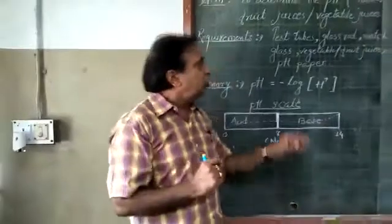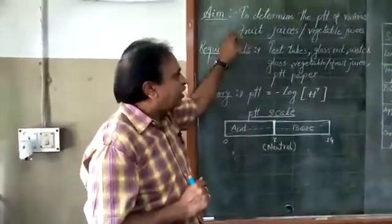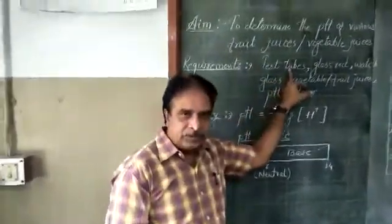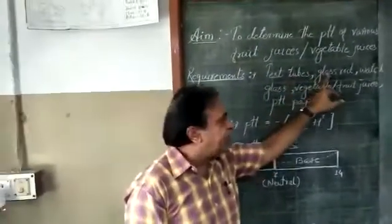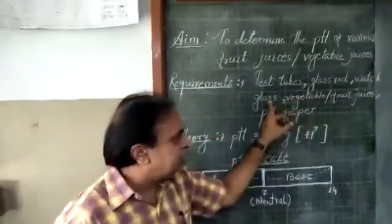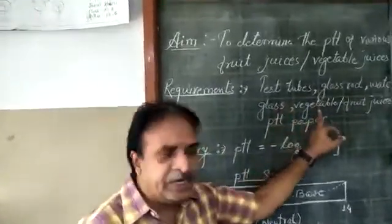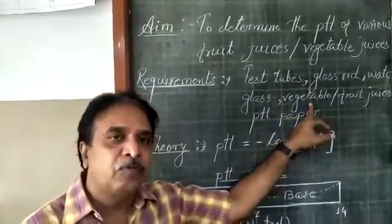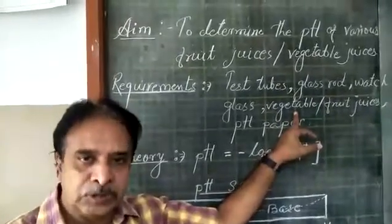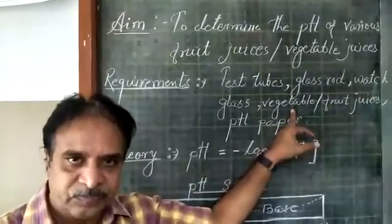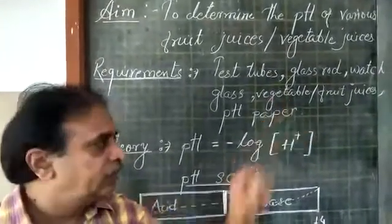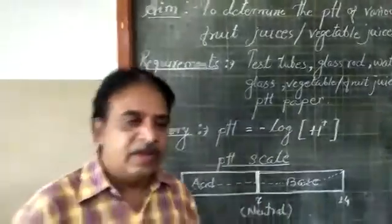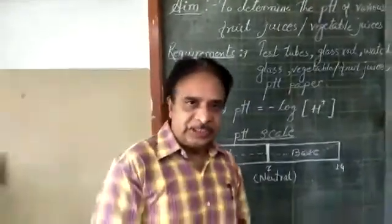For today's experiment we need certain test tubes, glass rods, watch glass, certain samples of fruit juices and vegetable juices, and pH paper. Let's see how to do this.